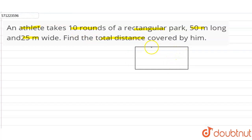So distance covered in one round is equal to perimeter of rectangle. Perimeter of rectangle is twice into length plus breadth.